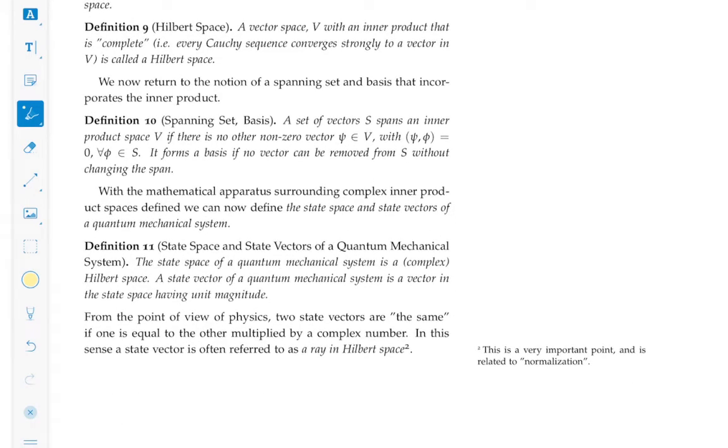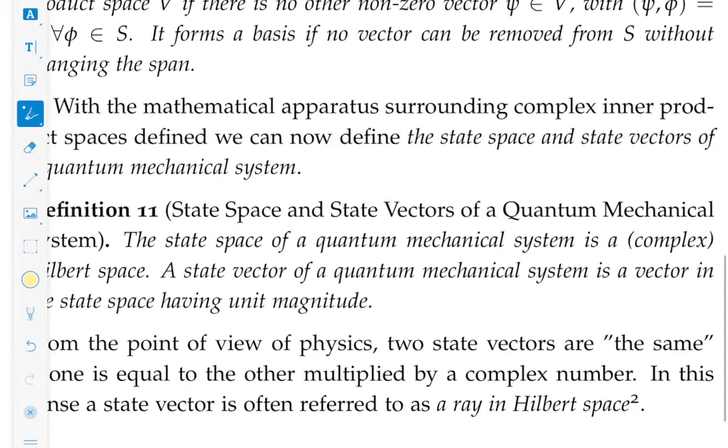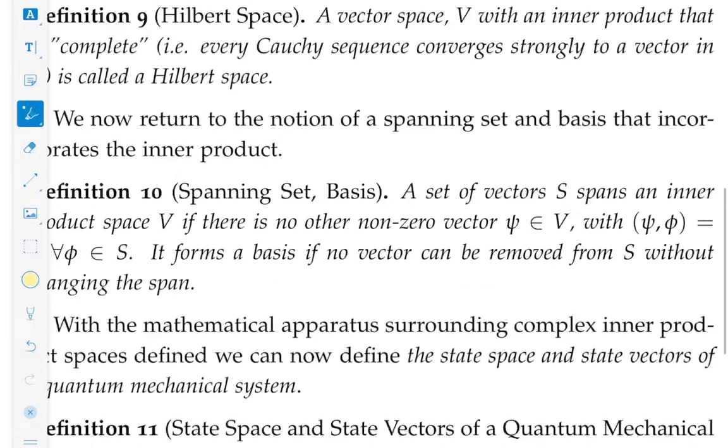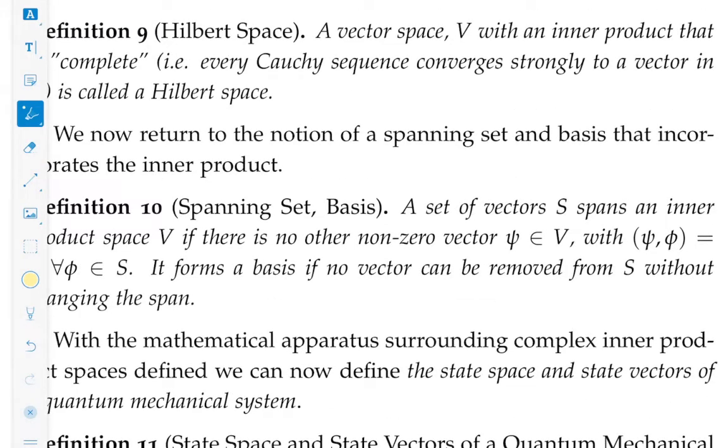And so, we end with a couple of definitions. First of all, the notion of Hilbert space. You hear that a lot. A Hilbert space is a vector space with an inner product that has the property that every Cauchy sequence in that vector space converges to a vector in that vector space. We say it's complete in that sense.